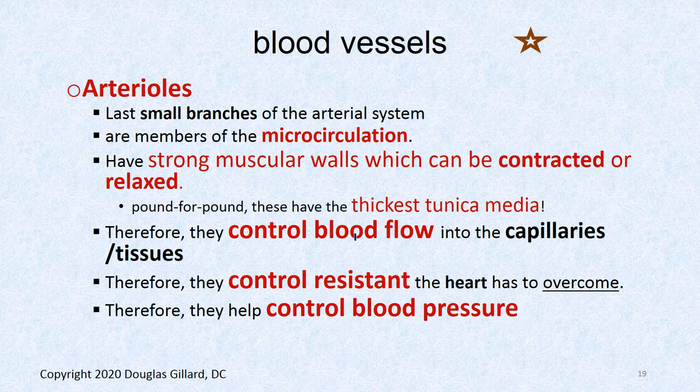Arterioles, again part of the microcirculation, are really important. Pound for pound, these have more smooth muscle than any other blood vessels in the body. We can control that smooth muscle through mechanisms like angiotensin II and norepinephrine. When you contract it, it closes the lumen of the artery, regulating how much blood gets into the capillaries to feed the associated tissue. Arterioles are critical in blood pressure control.